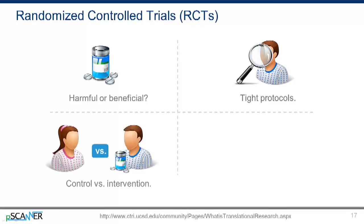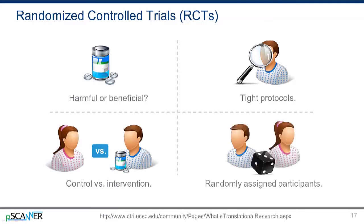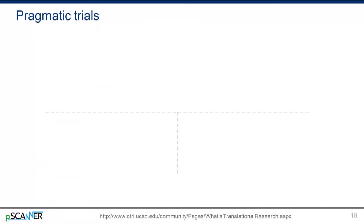Participants must be randomly assigned to a group in order to prevent any bias in who's assigned to which group. In an RCT of a new medication, one group might get the new medication — the intervention group — while another, the control group, might receive a placebo. Patients would be randomly assigned to one of the groups and might not know which group they're in.